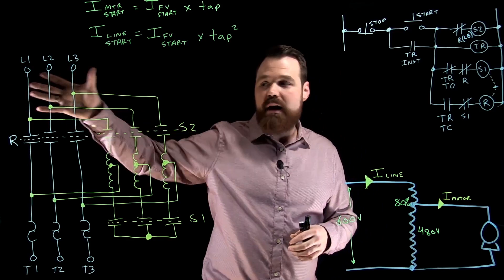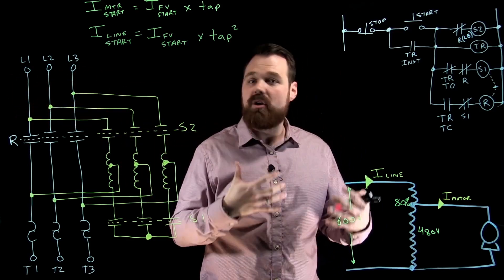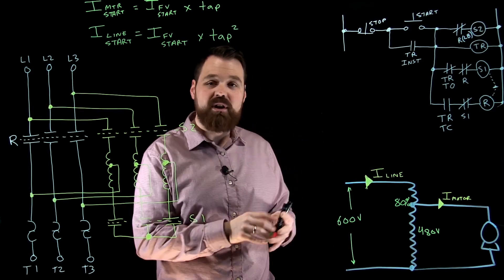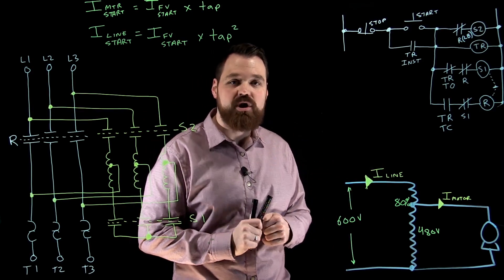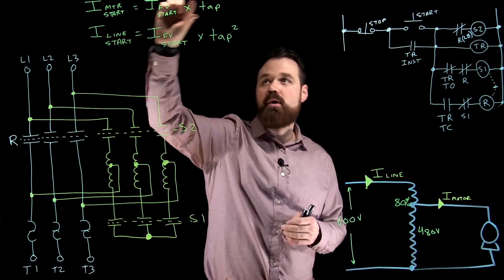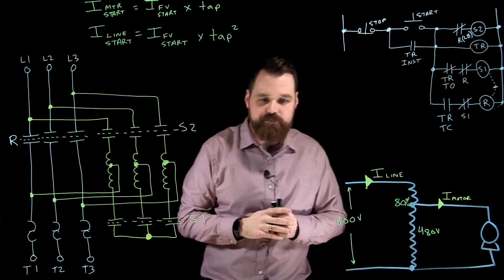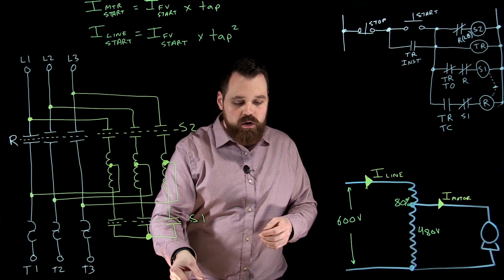This means up here at my line terminals, I can use smaller conductors, possibly smaller overcurrents. I'm less worried about that inrush current because we're seeing our inrush current to the motor go down, but our inrush current on the line coming down two steps. Awesome.